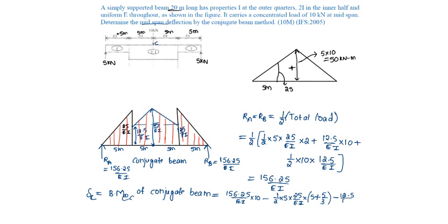And the next triangular area, upper triangular area, will be half base is 5 into 12.5 by EI into CG distance will be one third of 5.